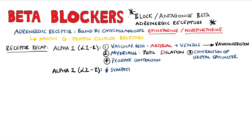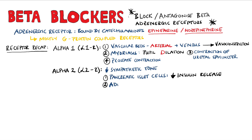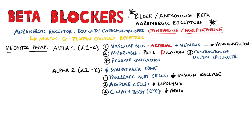Alpha-2 receptors are receptors that decrease the sympathetic tone in various tissues. These tissues include the pancreatic islet cells and adipose cells, where they decrease insulin release and decrease lipolysis, respectively. They also cause less aqueous humour to be produced from the ciliary body of the eye.